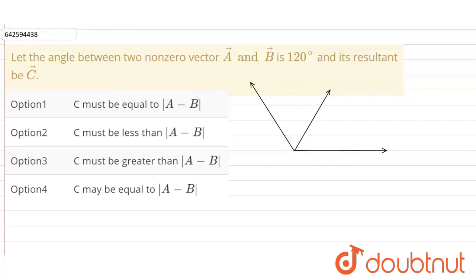So this is B vector, this is A vector and this is our C vector which is the resultant of A and B. So what we can say is C vector is A vector plus B vector. The angle between the A vector and B vector is given as 120 degrees.